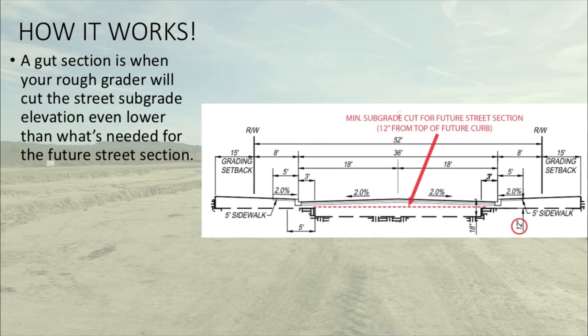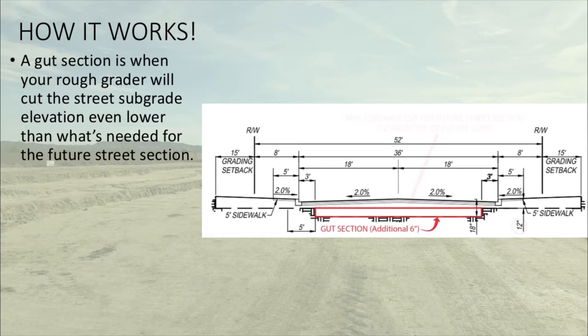If you take a look at the example here on the right, the minimum subgrade cut for the future street section is that dotted red line, which is 12 inches below the top of future curb. And if you go below that about another 6 inches, you now have your gut section in the street for the wet utility spoils. Keep in mind that 6 inches can fluctuate depending on how much wet utilities you actually anticipate on installing for your project, as well as how many spoils you anticipate to be generated.